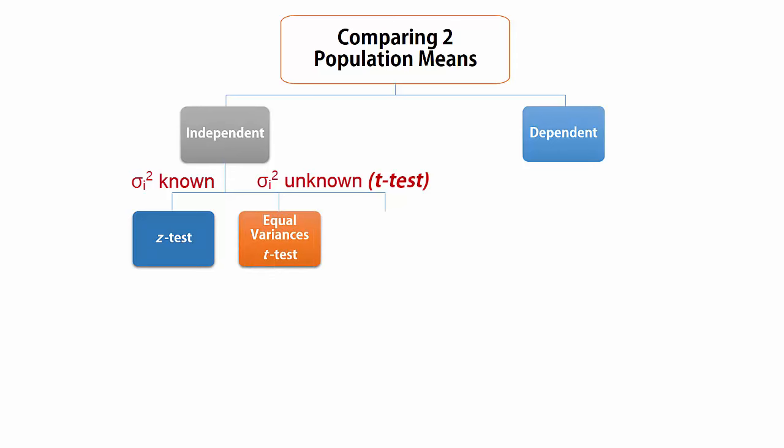If the population variances differ significantly, we conduct an unequal variances t-test. For dependent samples, we conduct a matched pairs t-test.